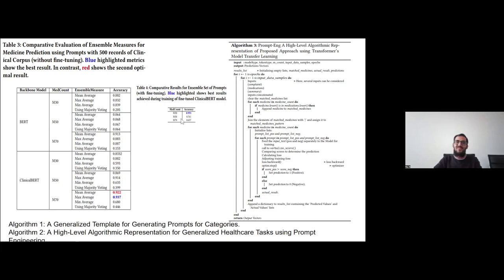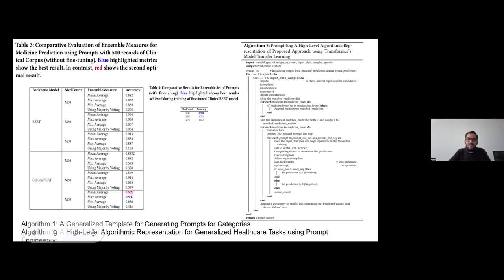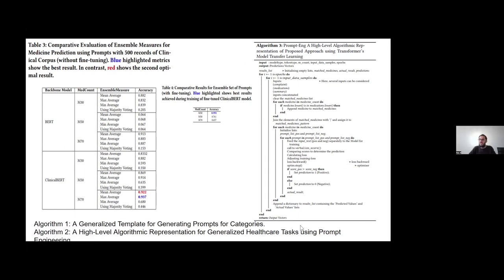Then further, we have the comparative results for ensemble set of prompts with fine tuning. Here we have the fine tuned result. In this, we have the medicine count and the accuracy. In this, we use the fine tuned clinical BERT and the fine tuned clinical BERT algorithm is given on the right side of the screen.